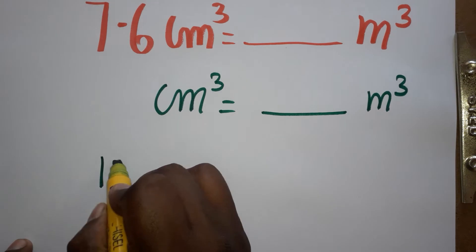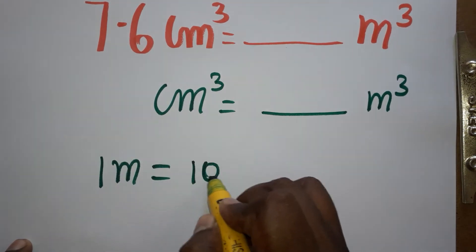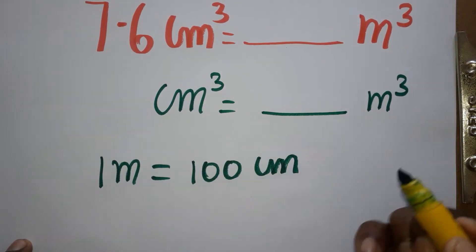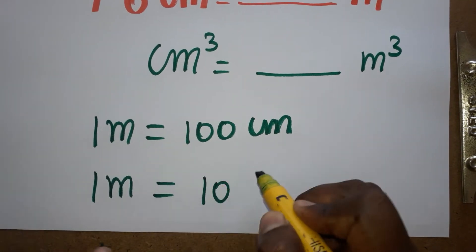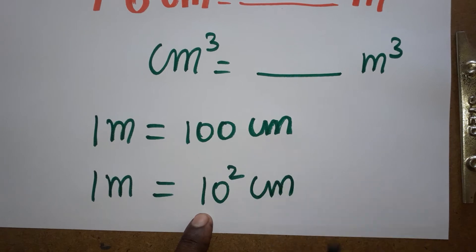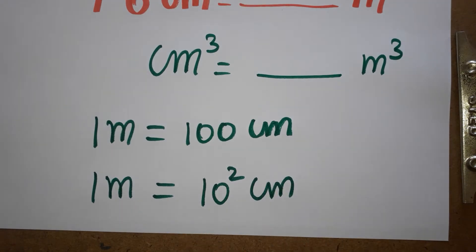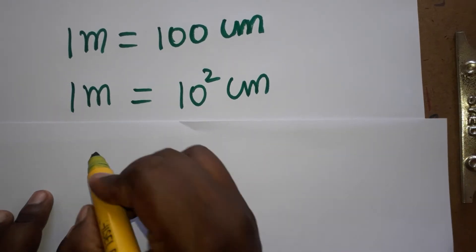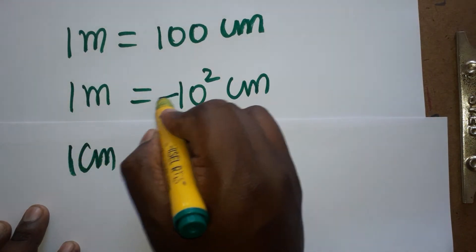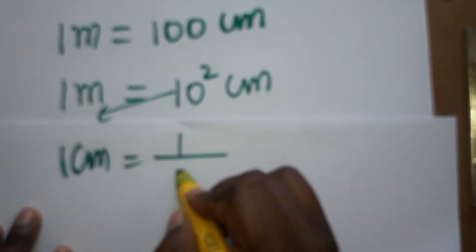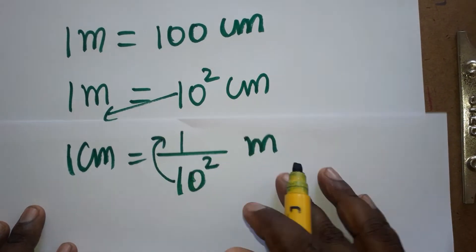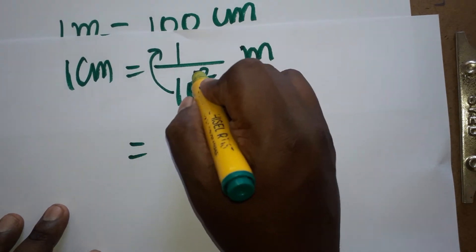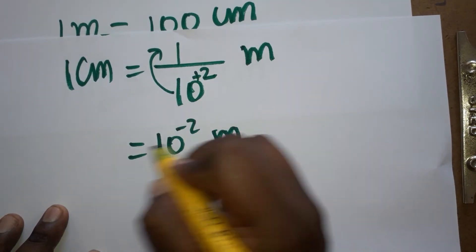First we will learn: 1 meter is 100 centimeter. Now 1 meter we can write as 10 squared centimeter, so 10 into 10 is 100. Now 1 centimeter we can bring as a denominator: 1 divided by 10 squared meter. Bringing from denominator to numerator, the power plus 2 changes to minus 2. So 1 centimeter is 10 power minus 2 meter.